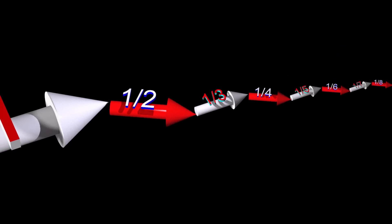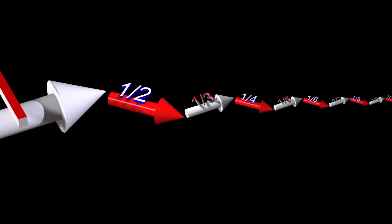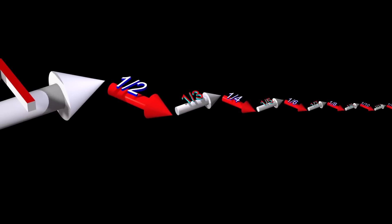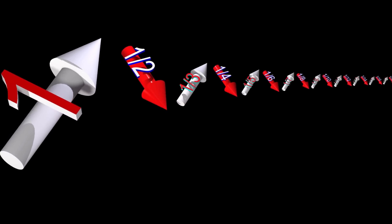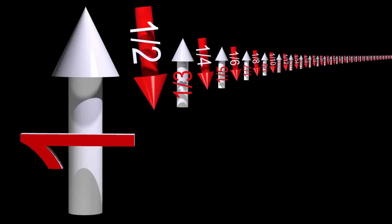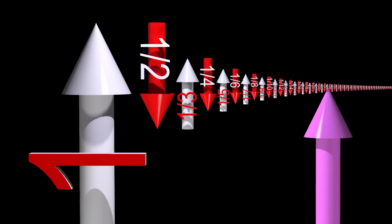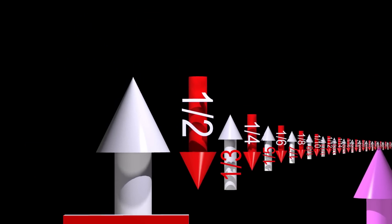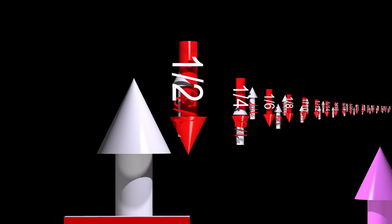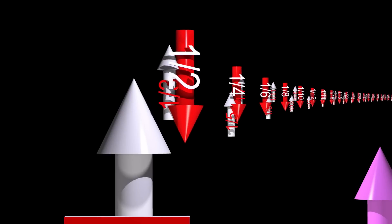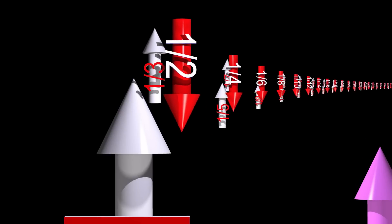When we add a sequence of numbers together, we typically expect to get the same sum regardless of the order in which these numbers are added. But there are certain types of infinite series whereby changing the order in which the numbers are added, we can change the sum to any number we wish.